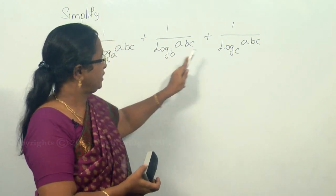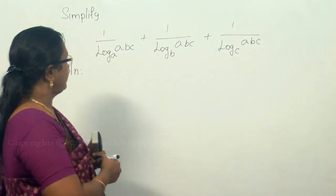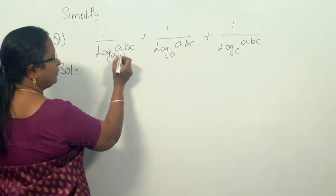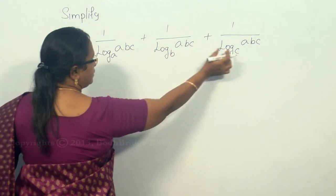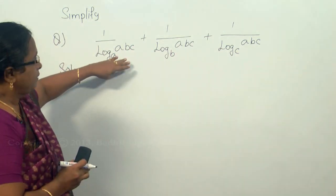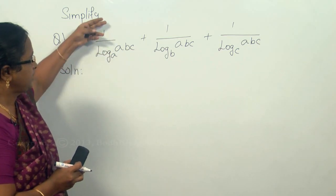Because here the bases are different, you cannot combine in that way. But what you can do is you can make the base same, because the values you have given is same. You can make the bases as same by interchanging this.